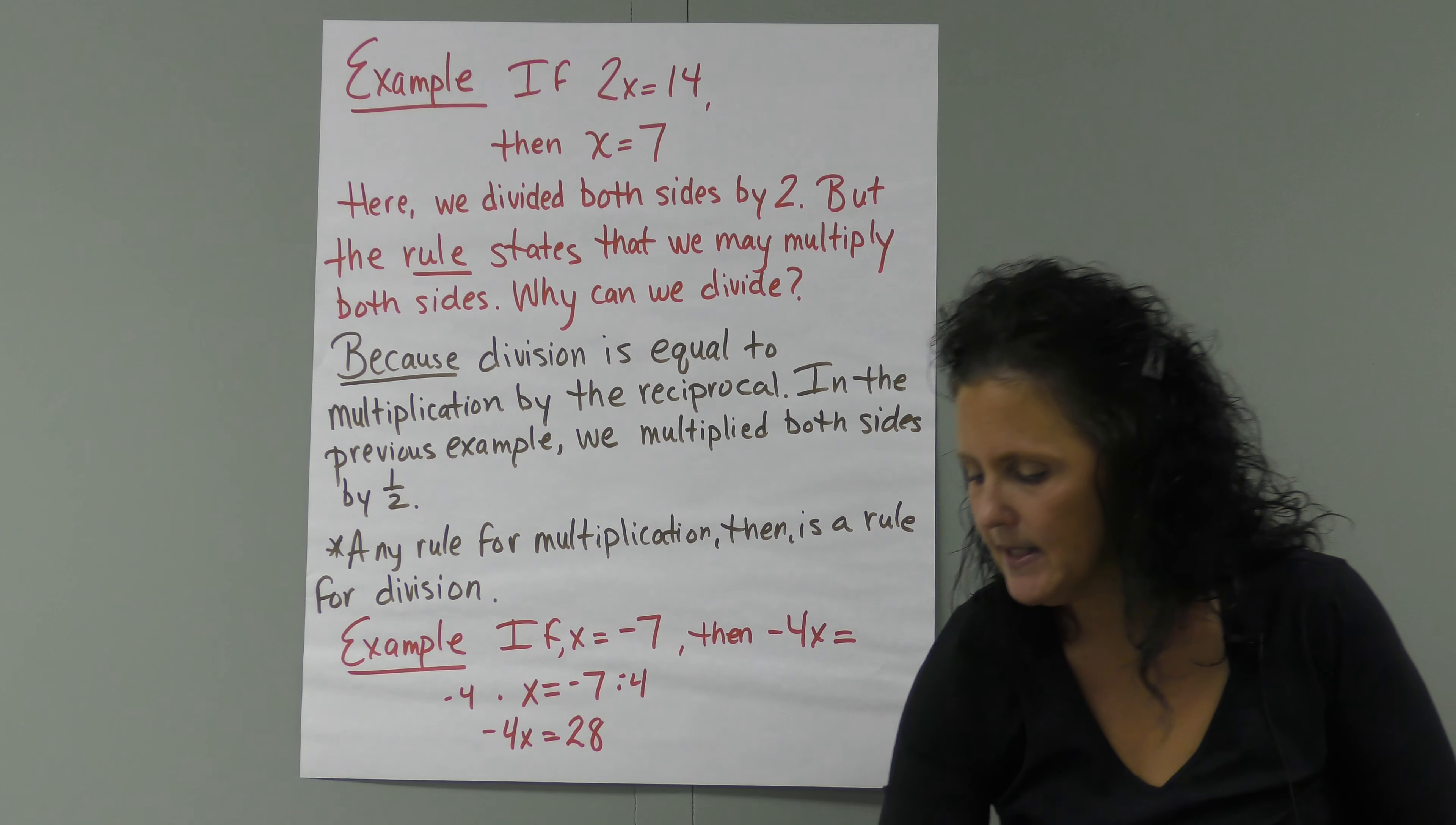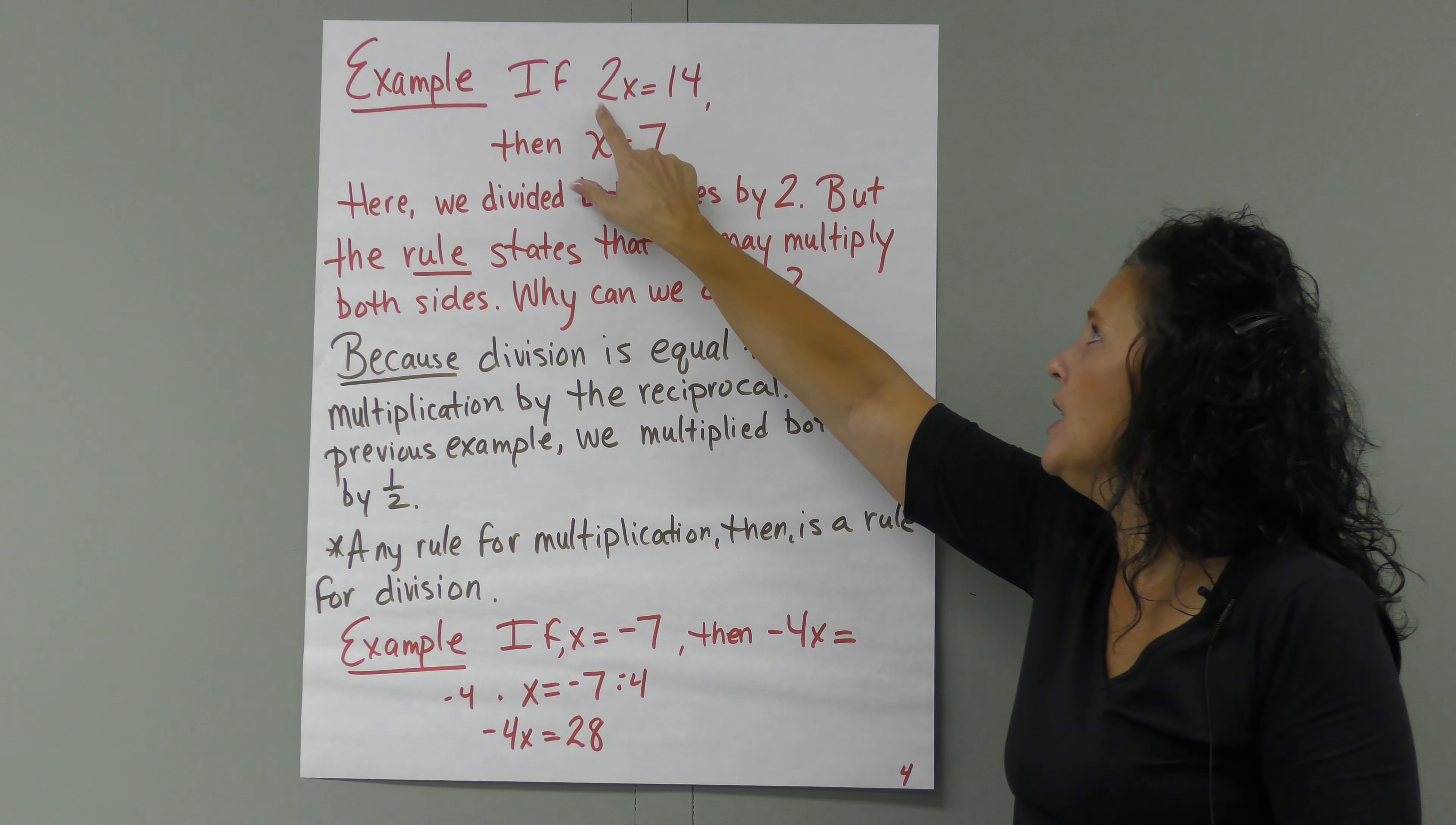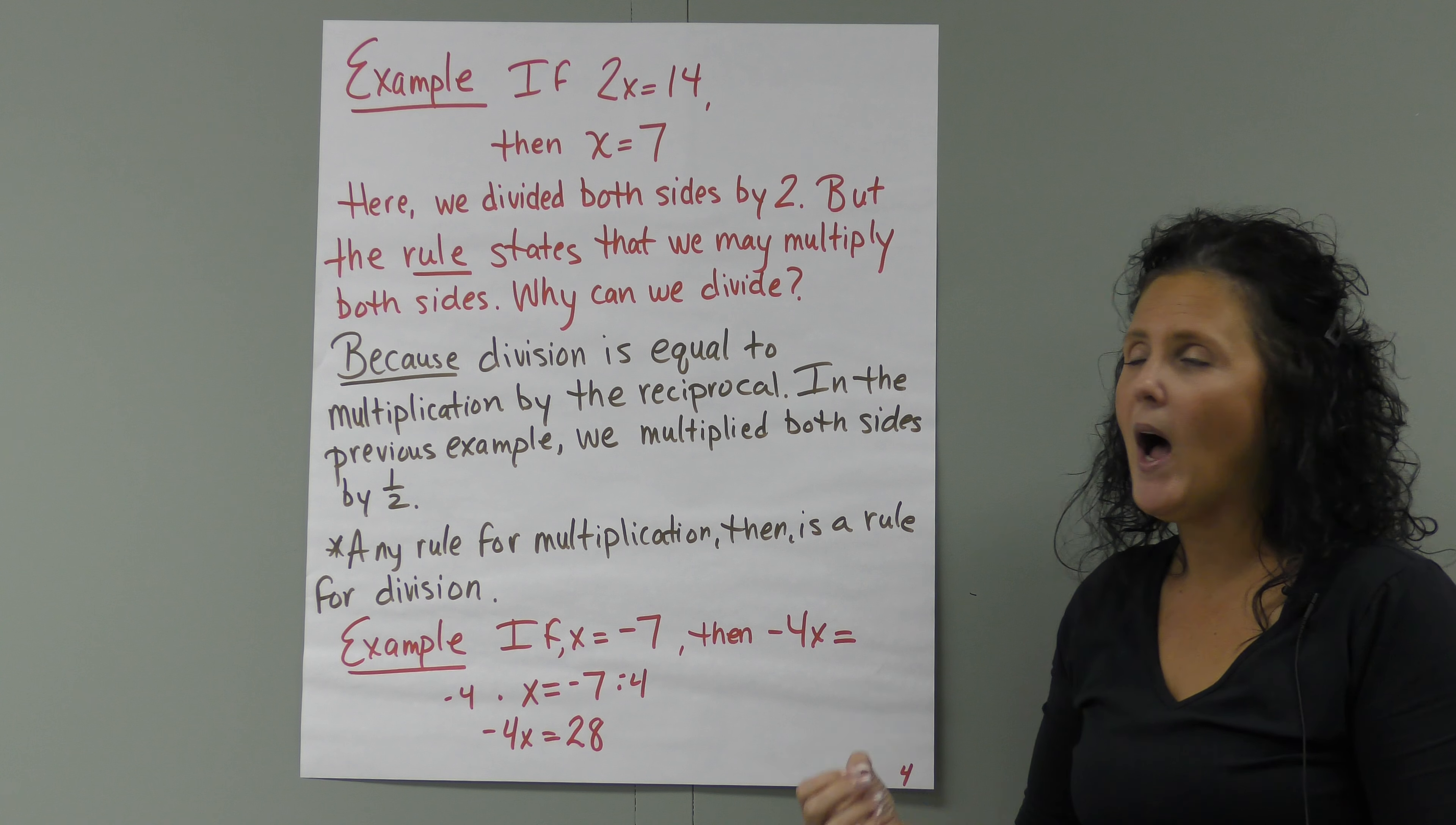Here's our other example. If 2X equals 14, then X equals 7. In order to solve this, we've got 2 multiplied by X here. So we have to divide by 2 in order to get rid of 2. So we divide by 2, it gets rid of it here. We can bring our X down. We divide by 2. 14 divided by 2 equals 7. If we divide both sides by 2, the rule states that we can multiply both sides. Why can we divide?